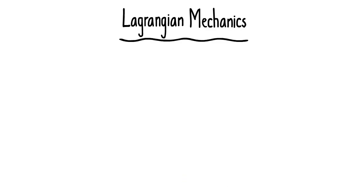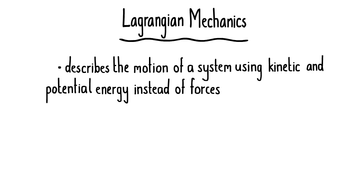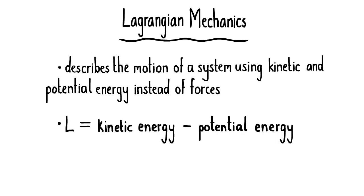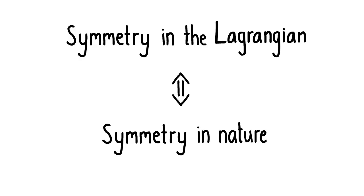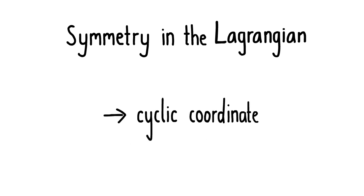Lagrangian mechanics is a way to describe the motion of a system using energies instead of forces, where L is the kinetic minus the potential energy of the system, and the Euler-Lagrange equation gives us equations of motion. To use Lagrangian mechanics to describe Noether's theorem, we equate continuous symmetries in the Lagrangian to continuous symmetries in nature. And we do this by defining something called a cyclic coordinate, which is a quantity that does not explicitly appear in the Lagrangian.